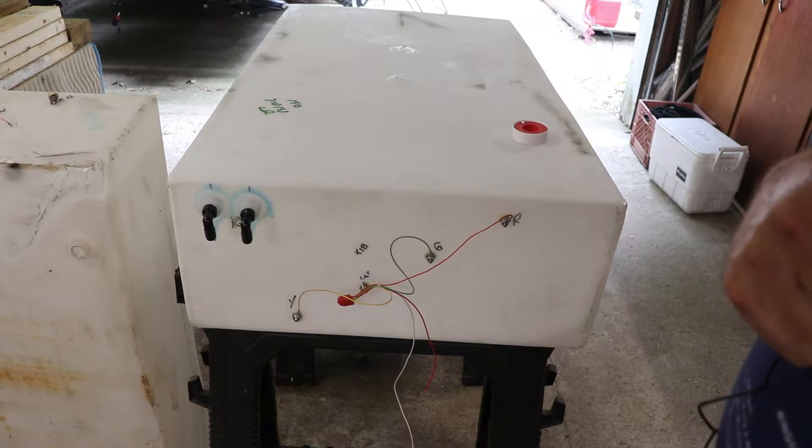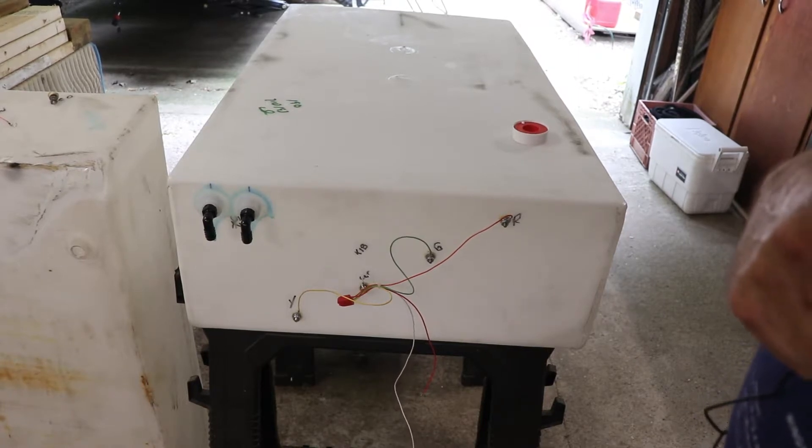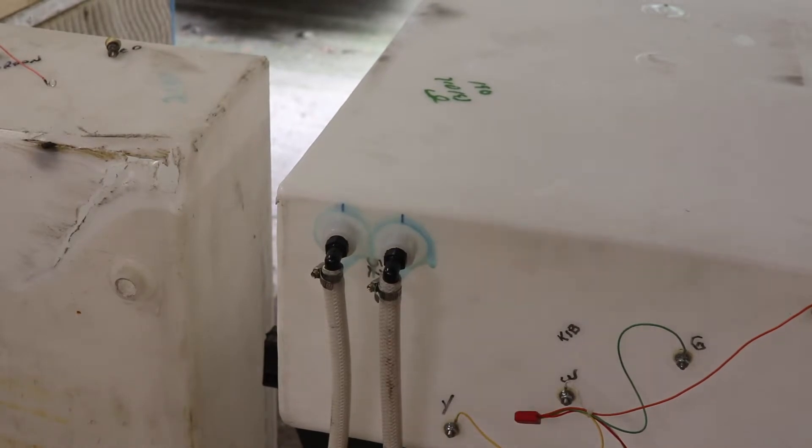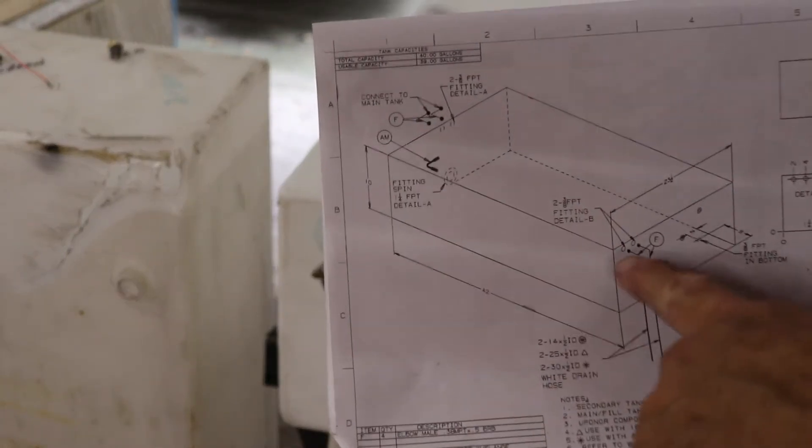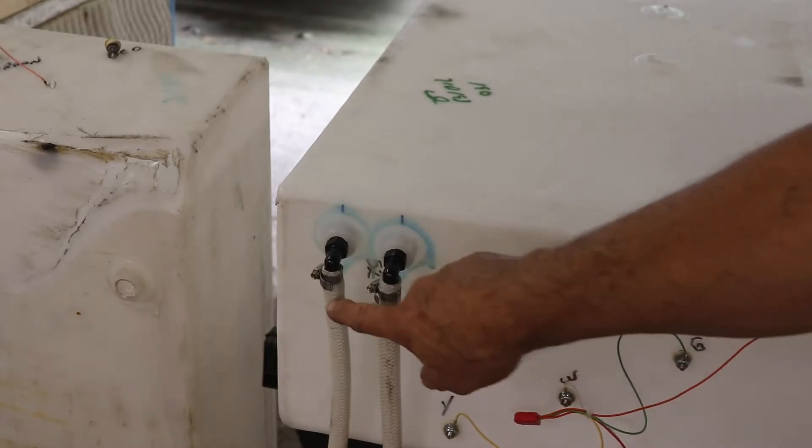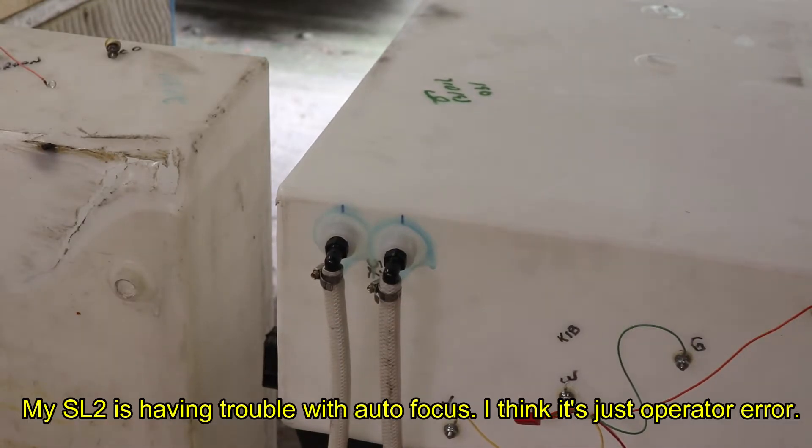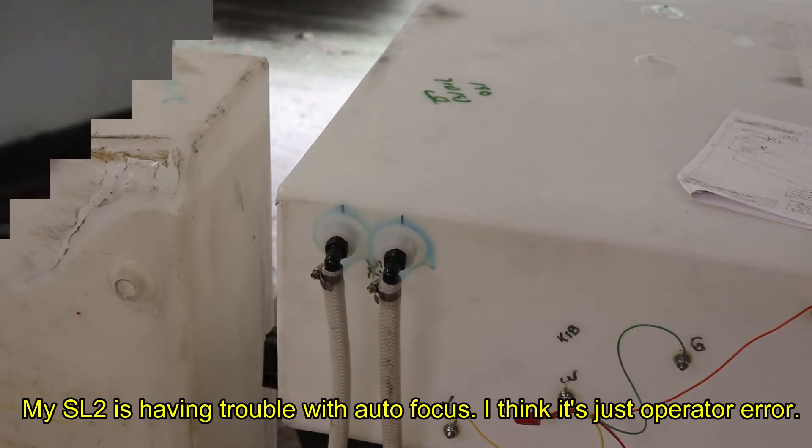So now basically the tank is all ready to go back on into the camper. Now after doing some further checking I checked the print and these two here happen to be these two lines here which are just drain hoses. So I've gone ahead and I've made the connection on those.